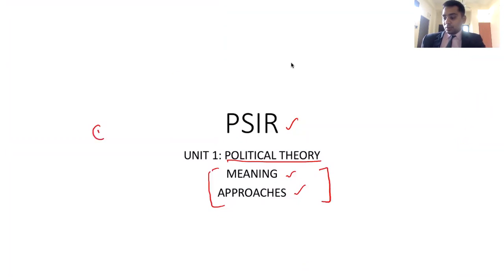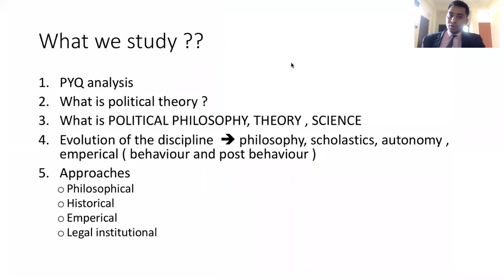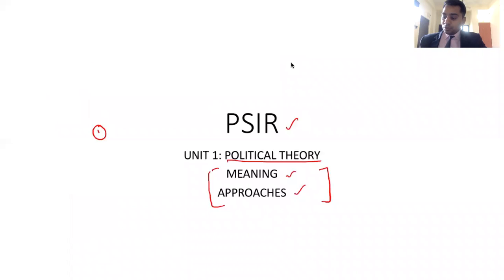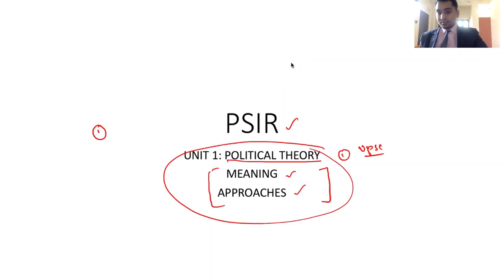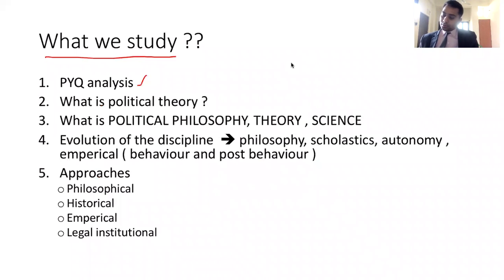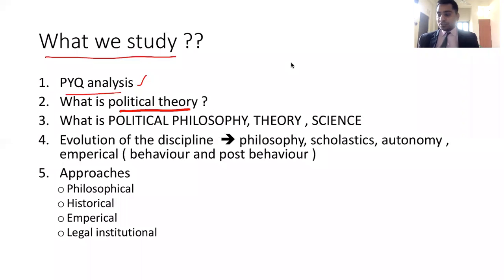From this chapter, I wanted to analyze previous year questions — how far this topic is important for UPSC — and what type of questions they are asking. How many marks are going to come, and by looking at the nature of the questions, you will be in a good position to understand how the topic is oriented. After analyzing the previous year questions, I'll start with the basics: what is political theory, and what is the difference between philosophy, theory, and science.